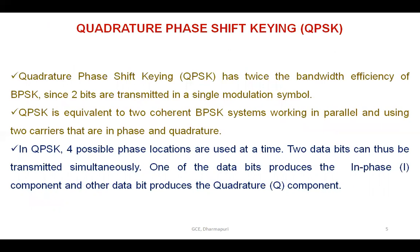The next topic is QPSK — Quadrature Phase Shift Keying. QPSK has twice the bandwidth efficiency of BPSK since two bits are transmitted in a single modulation symbol. QPSK is equivalent to two coherent BPSK systems working in parallel and using two carriers that are in-phase and quadrature phase.